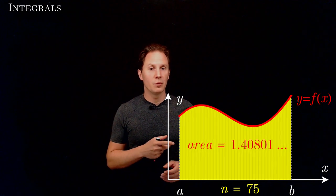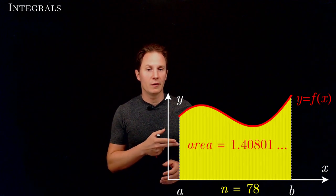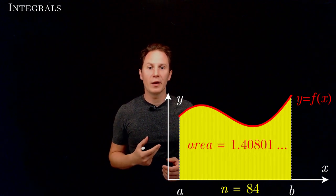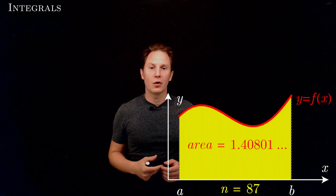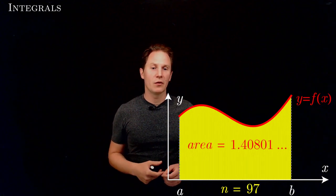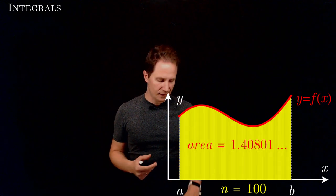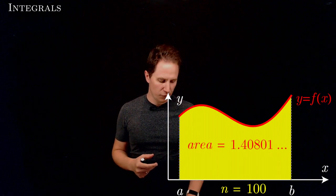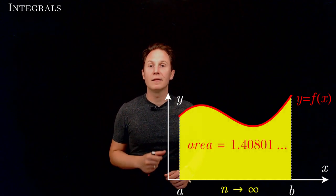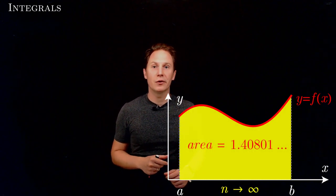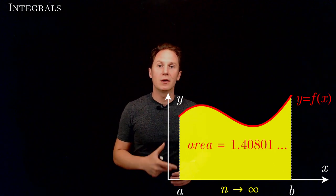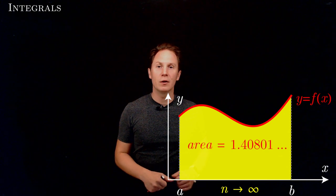You can see the number barely changes anymore. As we let n go to infinity in the limit, we get the area under the graph of the function to be that number for this function over that interval.